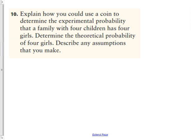And the last question that you didn't have to do, it says, explain how you could use a coin to determine the experimental probability that a family with four children has four girls. Determine the theoretical probability of four girls. So, since one coin could be heads or tails, we could actually represent heads to be a boy and tails to be a girl. I'm going to do a tree diagram here. So, theoretically, if you flip a head, this would be great if it actually worked like this. You flip a head on a coin, you have a boy. If you flip a tail, you've got a girl.